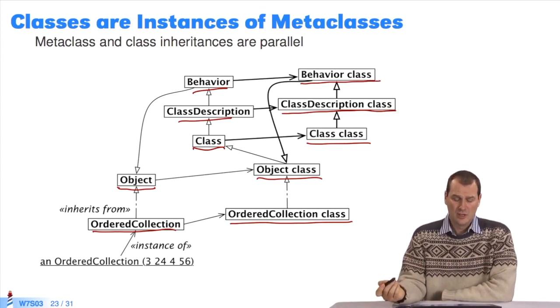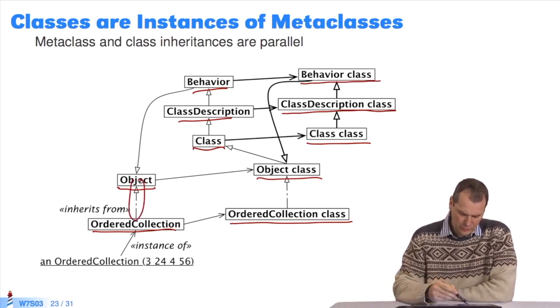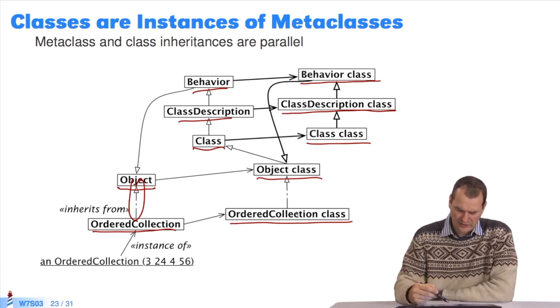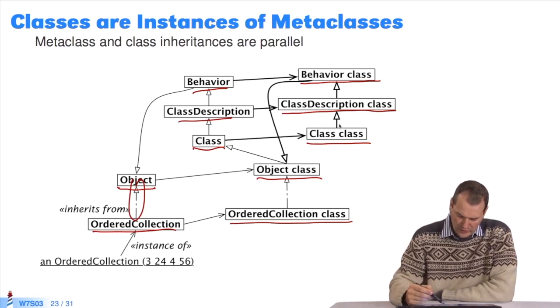We must also look at the inheritance chain. If there's an inheritance relationship between these two elements, the same relationship exists here on the right. As you see here, we can trace the inheritance chain. Behavior class therefore inherits from object class.